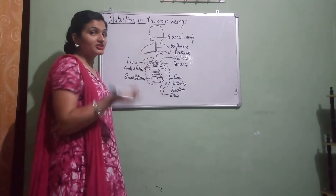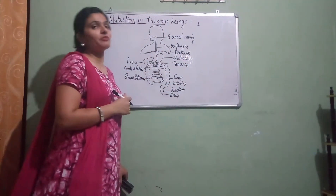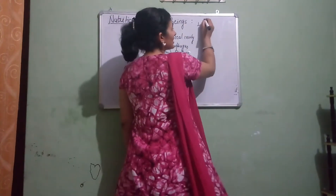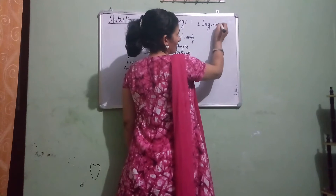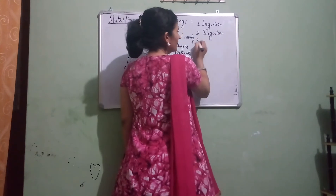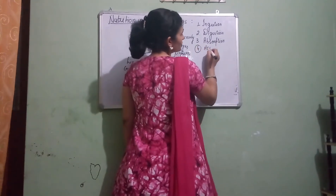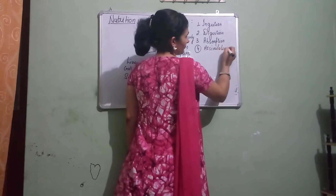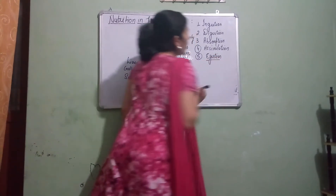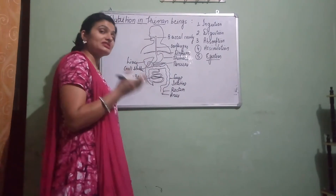Rectum and anus — these are the different parts of our digestive system, through which digestion and nutrition takes place. The steps of nutrition in human beings are the same as in amoeba: first is ingestion, second is digestion, third is absorption, fourth is assimilation, and fifth is egestion. The steps are the same but the process is different.